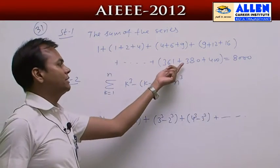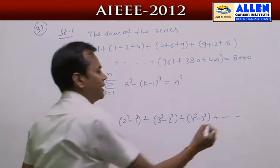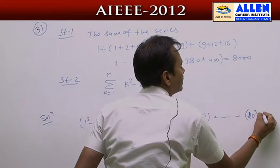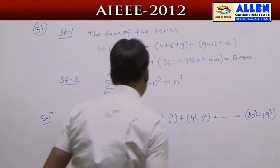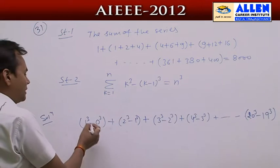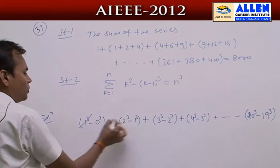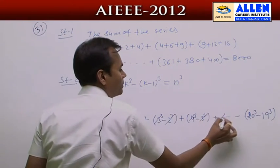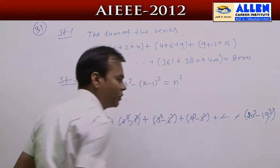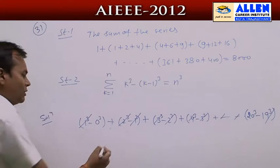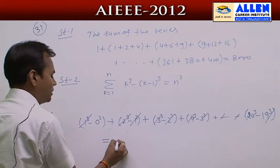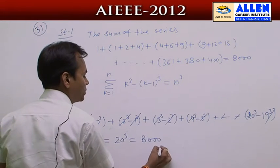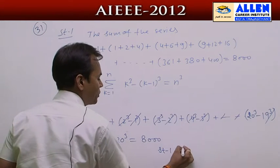Summing this series, the last term is (20³ − 19³). When we add all terms, intermediate cubes cancel out: 2³ cancels, 3³ cancels, and so on. All terms cancel except 20³ and 0³. Since 0³ = 0, the sum equals 20³ = 8000. Therefore Statement 1 is true.